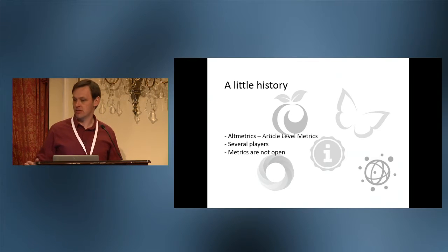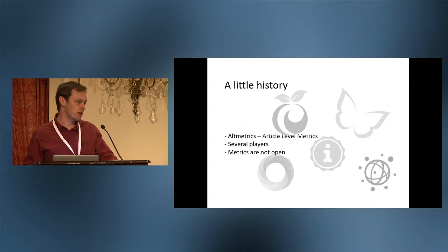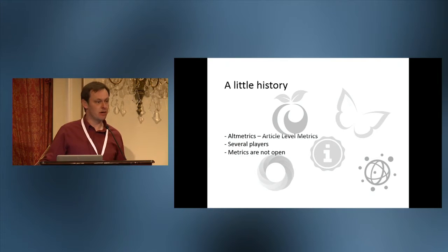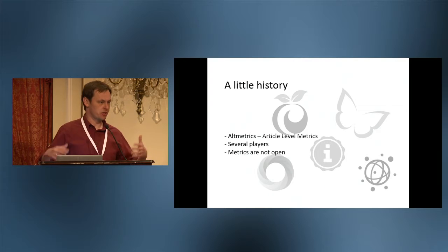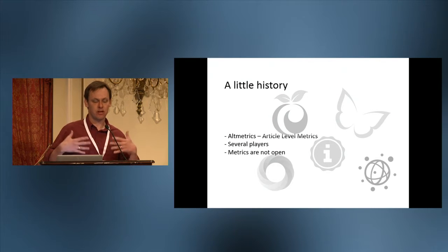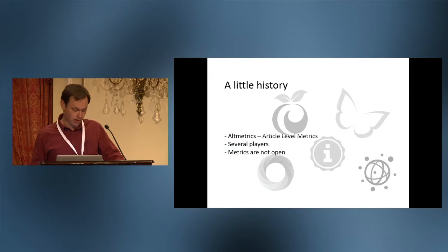A little history about this space. Many people know altmetrics or article-level metrics, a field that's been around for over a decade. There are many players in this space building tools and analysis on top of metrics — names like altmetrics.com, or even my alma mater PLOS, which runs an ALM project. This is part of a larger community trying to look at different ways of measuring the impact and reach of articles. One of the clear challenges is that the underlying metrics are closed — they're behind doors — and we want to find a way to open up those metrics so they can be audited, made comparable, and portable.